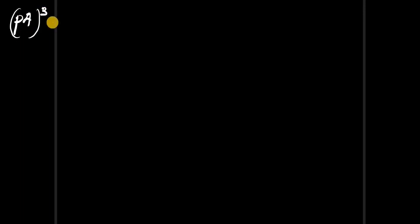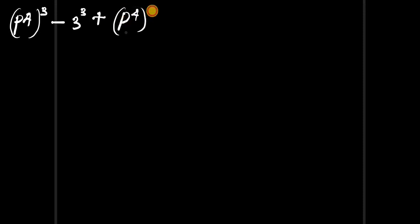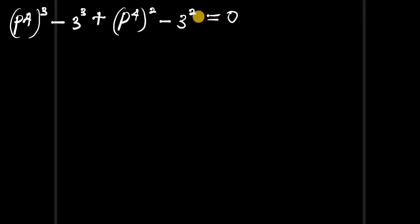We write p to the power of 4, all to the power of 3, minus 3 to the power of 3, plus p to the power of 4, all to the power of 2, minus 3 to the power of 2, and this equals zero.